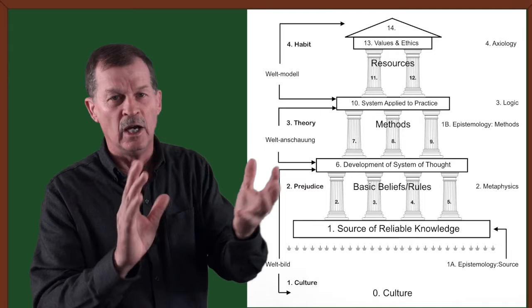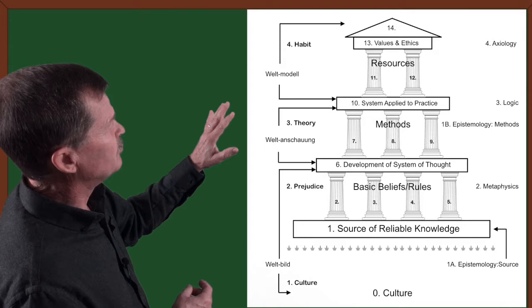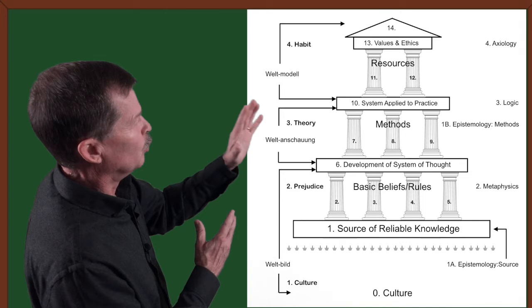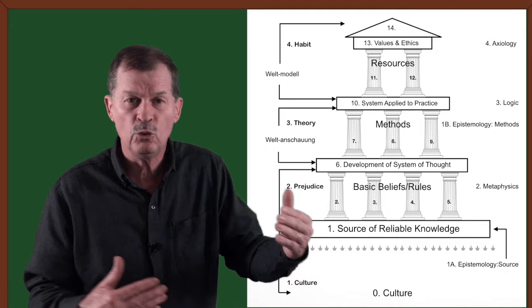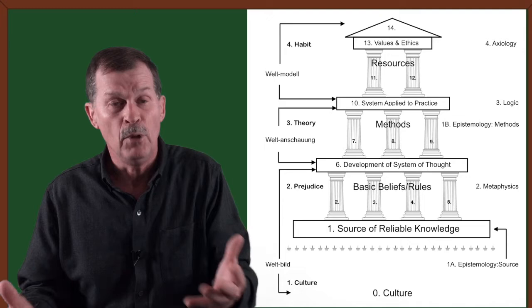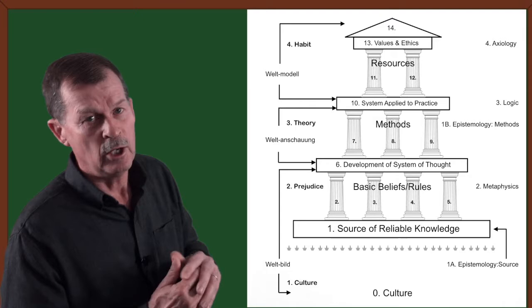Then we go up to Weltanschauung, which is a viewing of the world through the picture of the world. And that correlates to the prejudices and the theories that Stephen Jay Gould mentions.